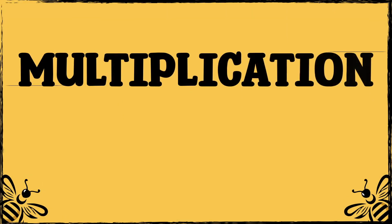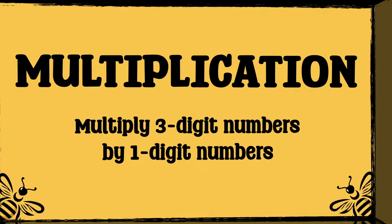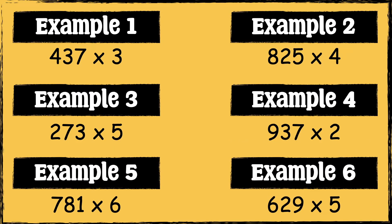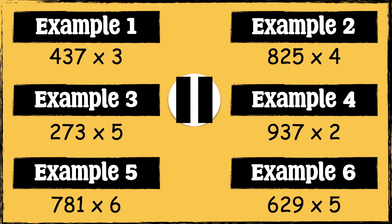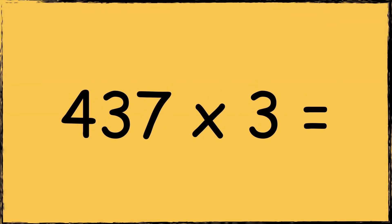In this video we'll be multiplying three-digit numbers by one-digit numbers. I'm going to work through six different examples. If you'd like to have a go at these examples yourself before we go through them, pause the video and press play when you're ready.